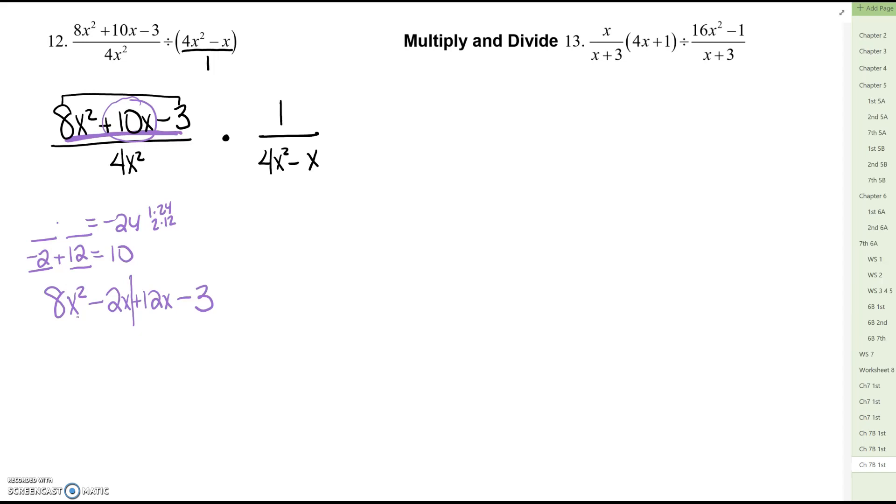These first two have 2x in common. 12x and 3 have 3 in common. So it factors to 2x plus 3, 4x minus 1. So that first numerator would factor into 2x plus 3, 4x minus 1. You've got the 4x squared on the bottom and 4x squared minus x would factor into x times 4x minus 1.